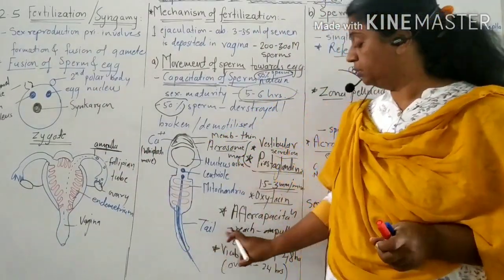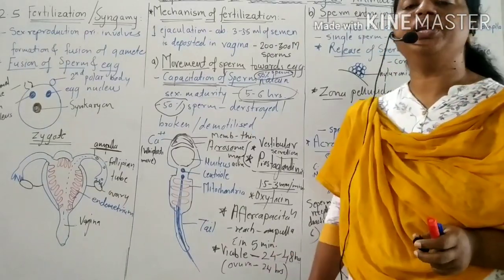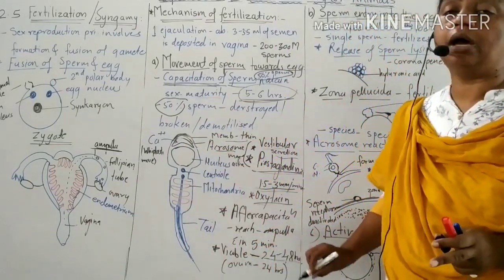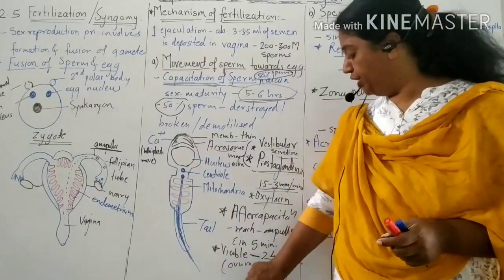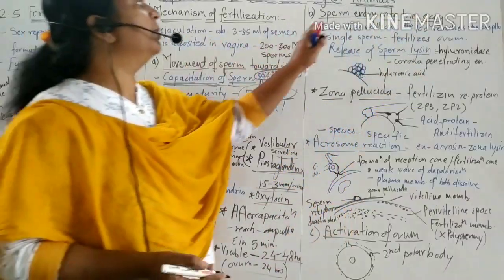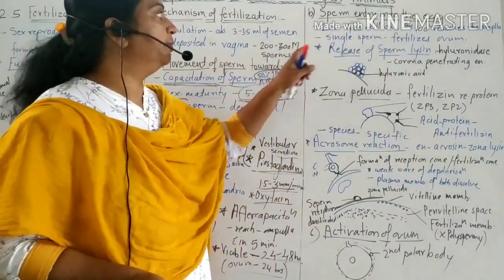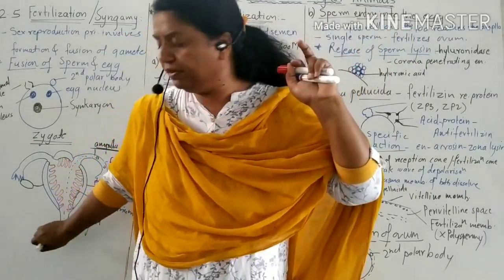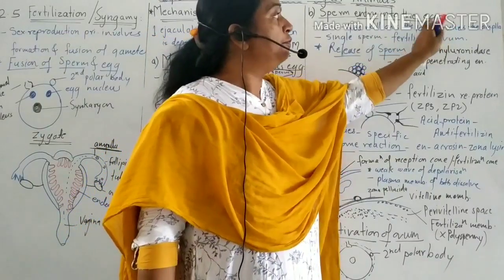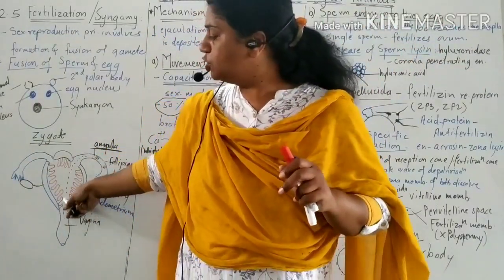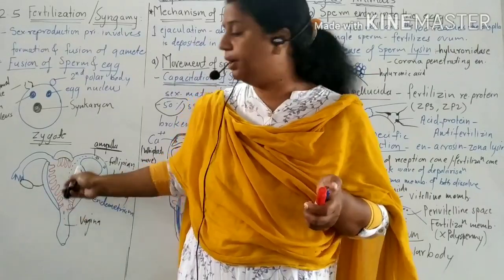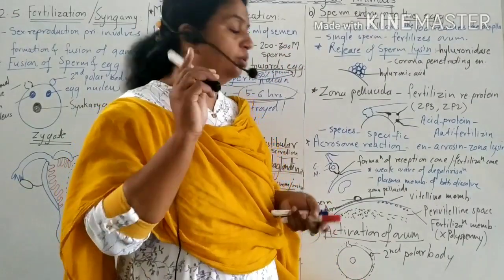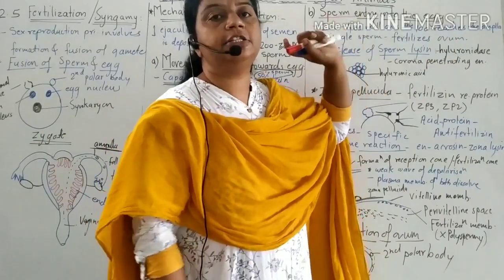Sperm are viable for 24 to 48 hours, while the ovum's viability is 24 hours only. The second step is sperm entry into the egg. About 200 to 400 million sperm are ejaculated into the female reproductive tract, but only a few hundred reach the ampulla — millions get killed and destroyed. Only a single sperm can enter and fertilize the ovum.